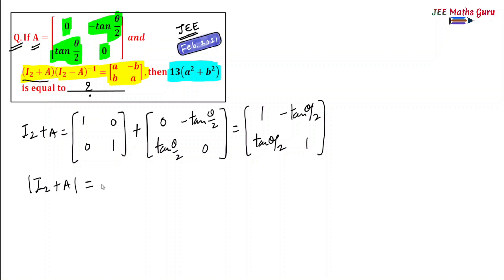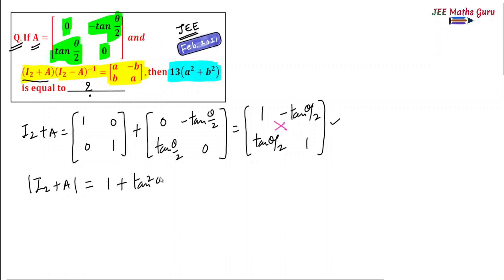Now I will write its determinant. By cross multiplication it is 1 + tan²(θ/2) minus minus, which is 1 + tan²(θ/2). Using the identity, this is sec²(θ/2).